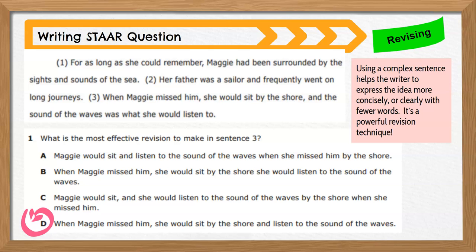So what does this look like on the STAR test? Well, here's an example of a revision question. Read sentence three: when Maggie missed him, she would sit by the shore, and the sound of the waves was what she would listen to. Notice the repetition of the words she would — she would sit, she would listen. There's no reason to repeat the same words in one sentence. The best revision decision here is to use a complex sentence to express an idea more concisely, clearly, and with fewer words.